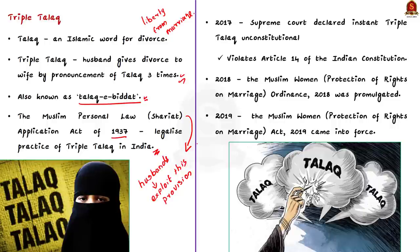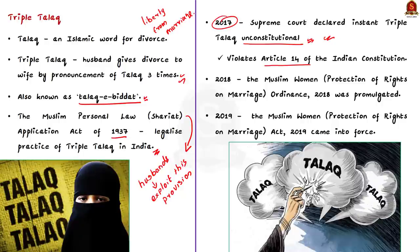Shayara Bano, a woman from Uttarakhand, suffered mental and physical torture by her husband due to dowry demands. Her husband granted triple talak through a letter, ending their 14-year marriage, and denied her custody of their two children. She challenged this before the Supreme Court on the grounds that triple talak is discriminatory and against the dignity of women. In 2017, the Supreme Court declared instant triple talak unconstitutional as it violates Article 14 of the Indian Constitution. Even after this verdict, the practice continued, creating the need for legislation.